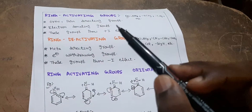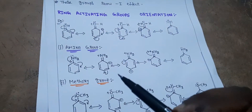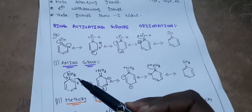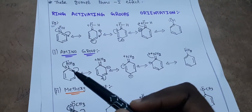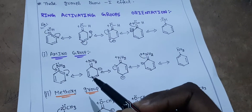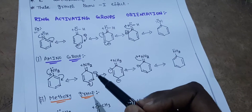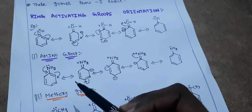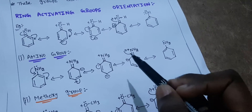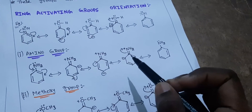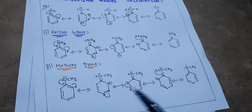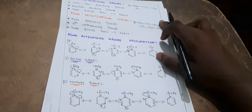Because much electron density is at ortho and para positions, these groups are known as ortho and para directing groups. Amino and methoxy groups are examples of ring activating groups. For the methoxy group, the lone pair transfers similarly — the bond shift occurs the same way as in resonance structures. The bond shifts provide negative charges at ortho and para positions, and positive charges neutralize through electron shifts. The final resonance structure is the same for the methoxy group as well.